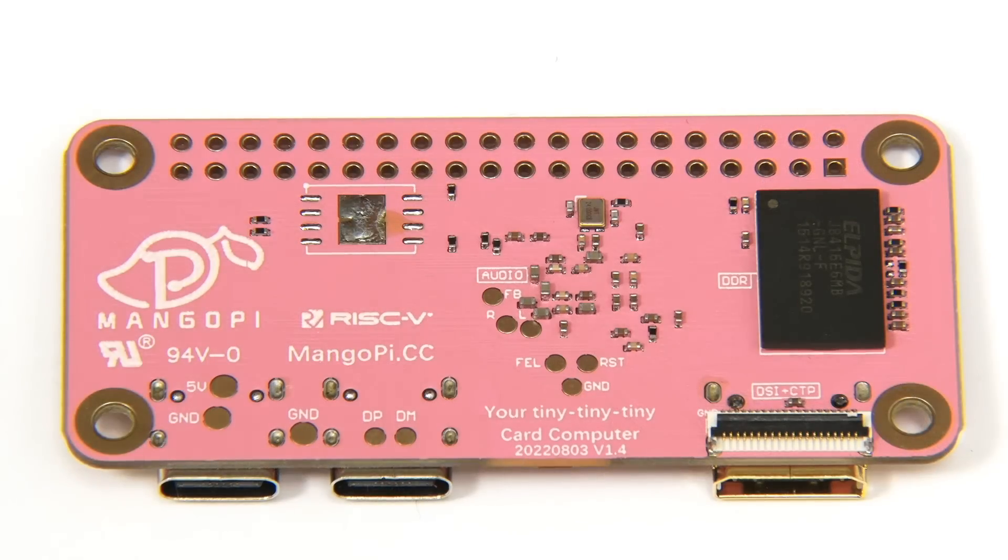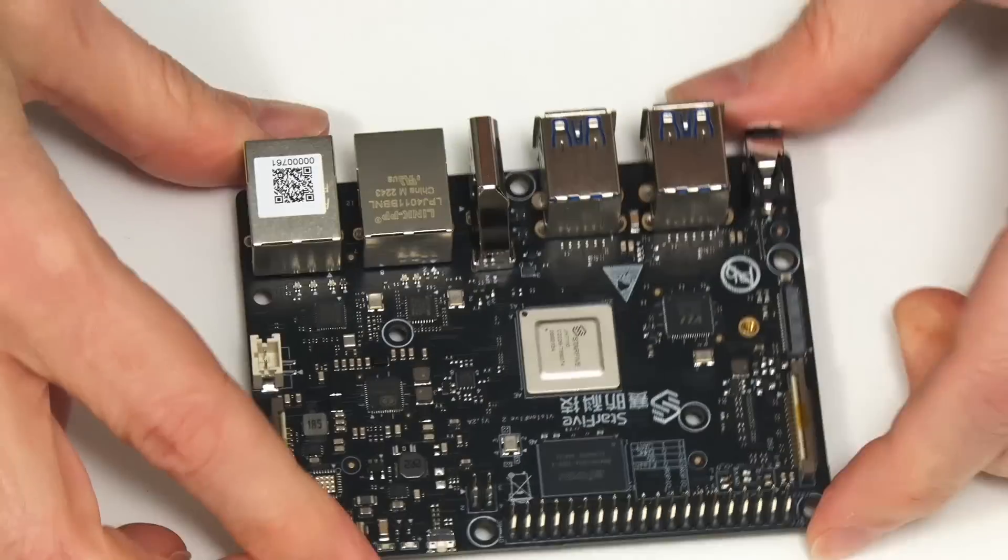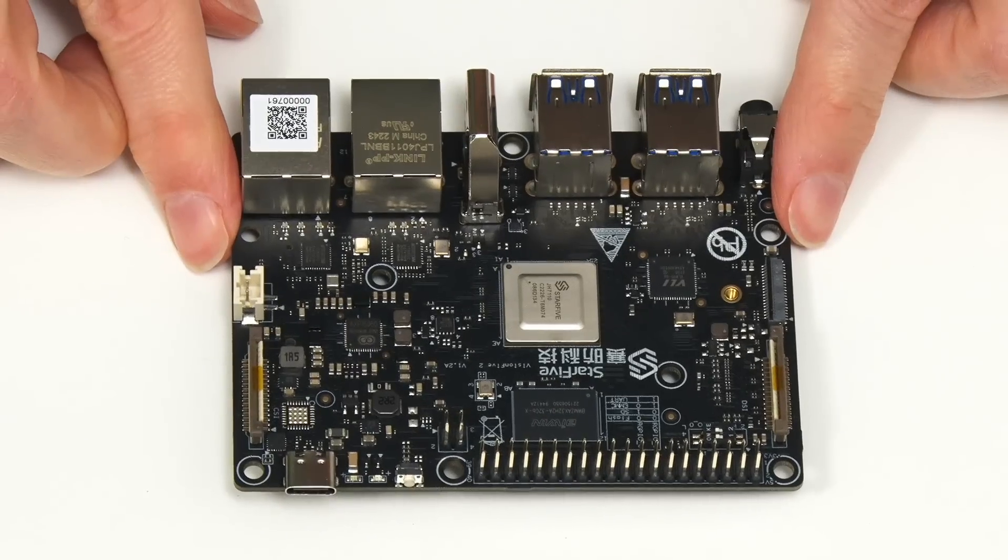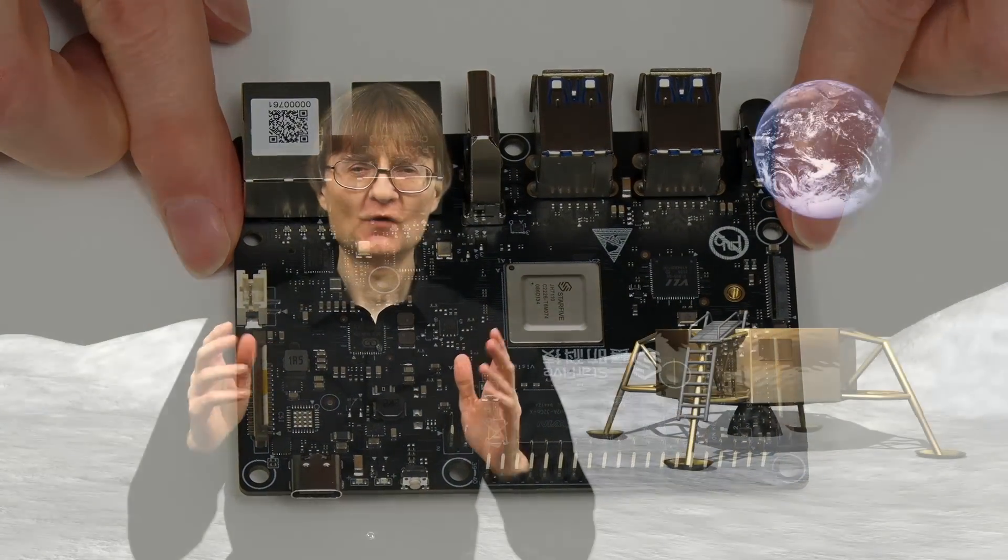Of the SBCs I've looked at so far this year, two were RISC-V: the MangoPi MQ Pro and the VisionFive 2. I will be returning to that board as its software continues to develop. We've also had a 2023 RISC-V update. In theory I won't come back to that till 2024, but if things happen in the world of RISC-V I think should be reported here, I'll certainly come back to that. It's an interesting area of development.